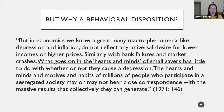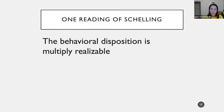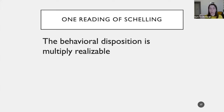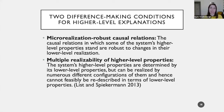How should we understand Schelling's claim that what goes on in the hearts and minds of small savers has little to do with whether they cause a depression? After all, it would be odd if segregated patterns were completely divorced from individual psychology. One plausible reading is that there's a behavioral disposition that the agents have — one which is multiply realizable by different underlying attitudes — but because those underlying attitudes tend to produce the same behavior, the causally relevant piece of information about the agents for the purposes of this model is just the behavioral disposition.